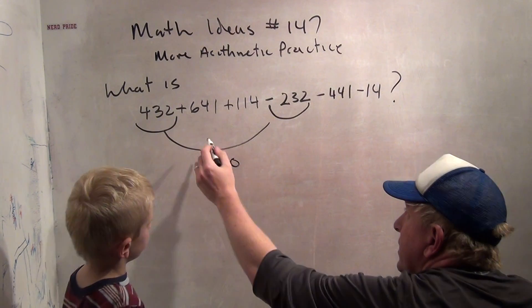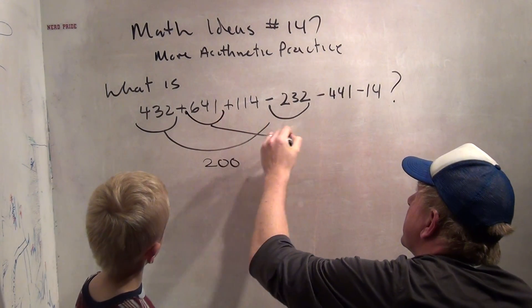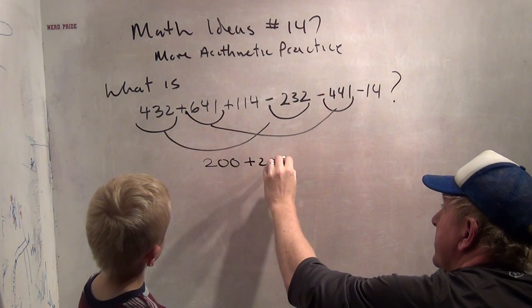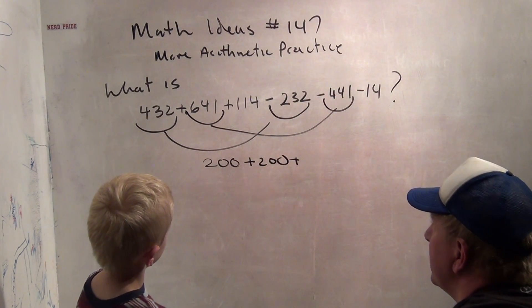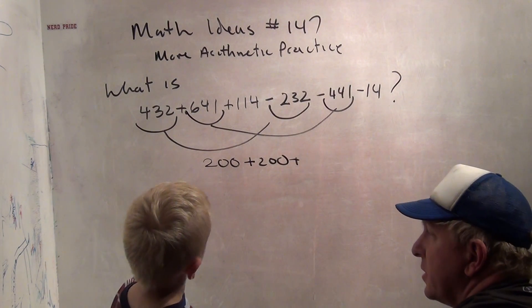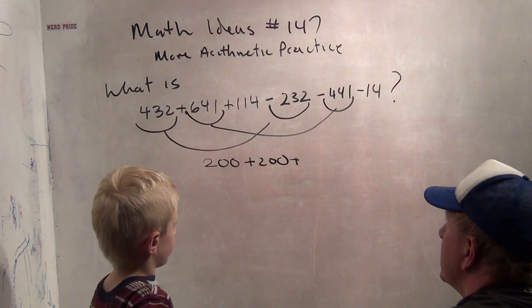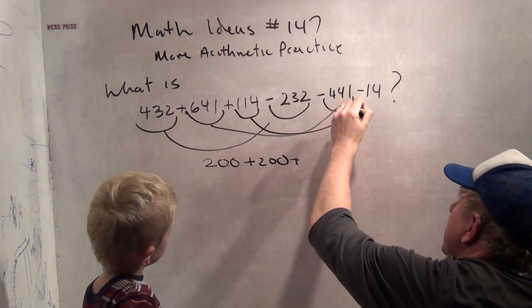641 minus 441 is just 200 too. So we've got 200 plus 200 by regrouping in our super easy way. And 114 minus 14 is 100. Right. Good job.